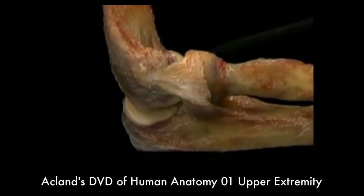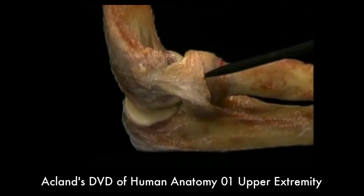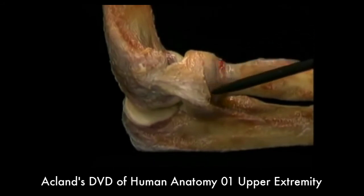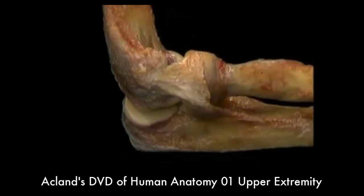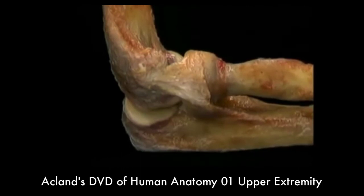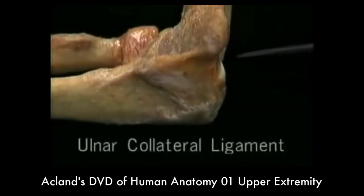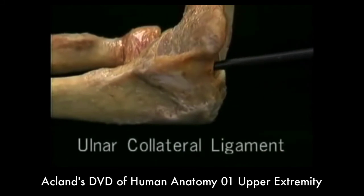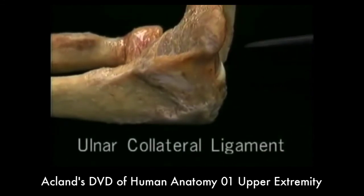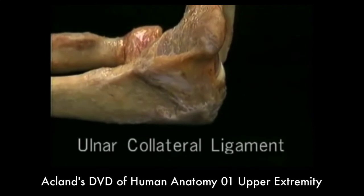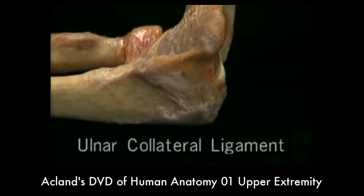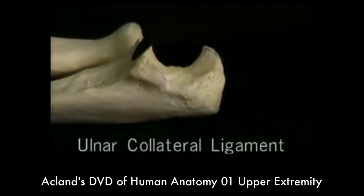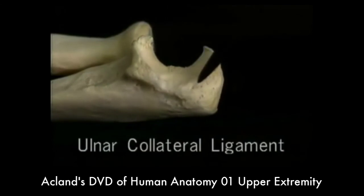What we see here isn't the edge of the ligament — it's the cut edge of the tendon of origin of a muscle, the supinator, which arises from the ligament. We'll see this shortly. Here's the ulnar collateral ligament. It arises from the medial epicondyle and fans out in a triangle. It's attached to the ulna all along the medial side of the trochlear notch.